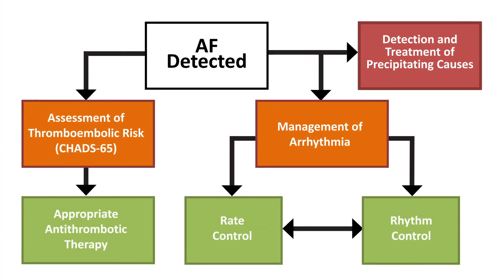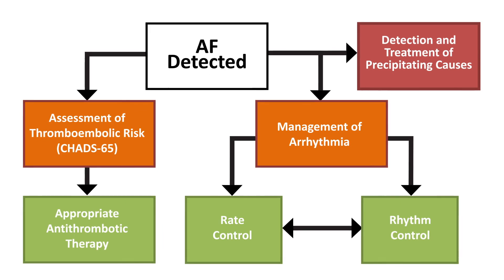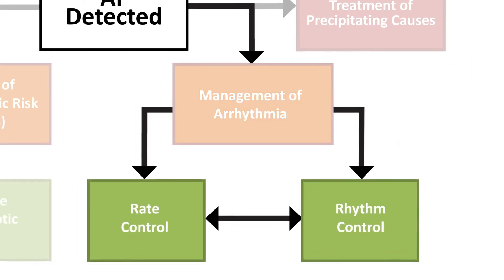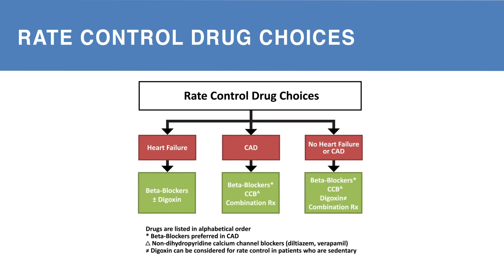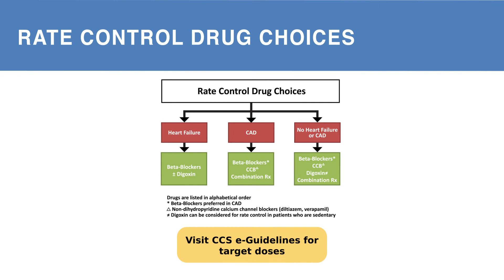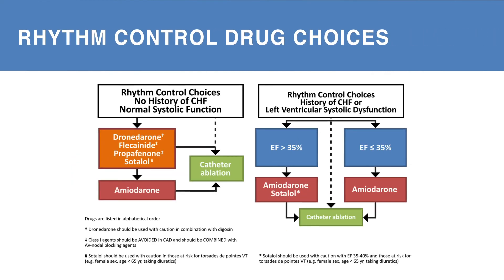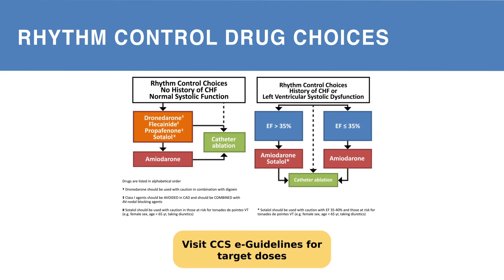Now that we've covered appropriate antithrombotic therapy for patients at risk of AF-related stroke, let's go back to the AF management overview. Once the patient's thromboembolic risk has been assessed and managed, the next step is to manage the arrhythmia. There are two general strategies for management of AF: rate control and rhythm control. Choice of rhythm control drug depends on the presence or absence of cardiac comorbidities. Choice of rhythm control strategy depends on the patient's history of heart failure and their systolic function. Consult the CCS's eGuideline site for recommended doses of individual rate and rhythm control medications and for a risk-benefit analysis for ablation.